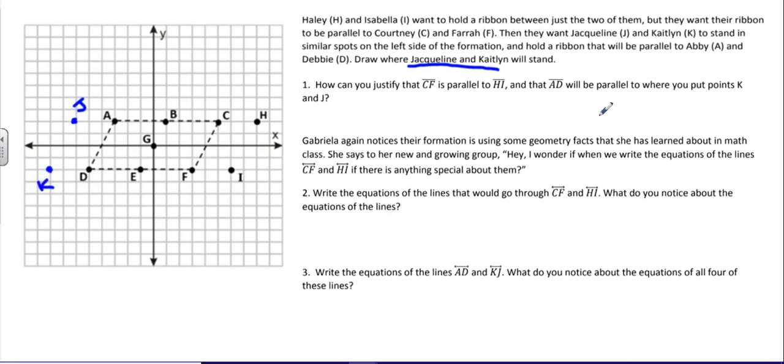Number one asks, how can you justify that segment CF is parallel to segment HI and segment AD will be parallel to where you put points K and J? In answering this question, you might reason through it visually, maybe using patty paper or a similar tool where you can draw a segment and then slide that segment around. I have the benefit of doing this with technology, so I know that HI has the same tilt as CF, so these segments are parallel.